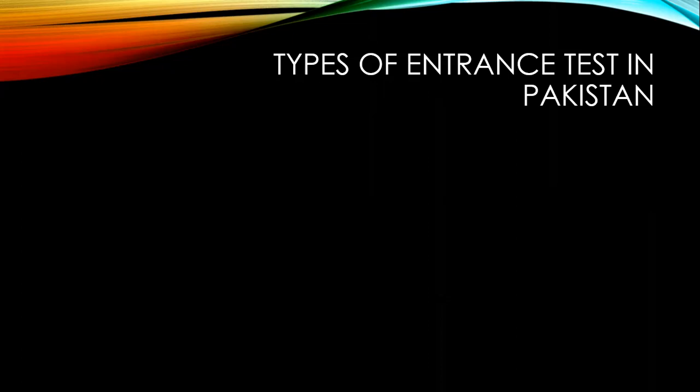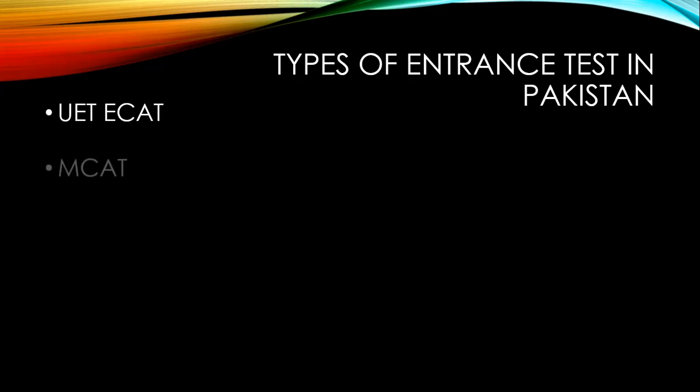Types of Entrance Tests in Pakistan. The first test is UET or ECAT, which is basically a subject test that includes physics, mathematics, chemistry, computer, and English. The number of questions depends on the section and varies according to the section.